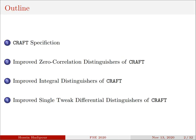I've divided my presentation into four parts. I'd like to begin by giving a short description about CRAFT. Next, I'm going to discuss the improved zero-correlation distinguishers we have provided for CRAFT. Quickly after that, I will recall the relation between integral and zero-correlation distinguishers and introduce our new integral distinguishers for CRAFT.